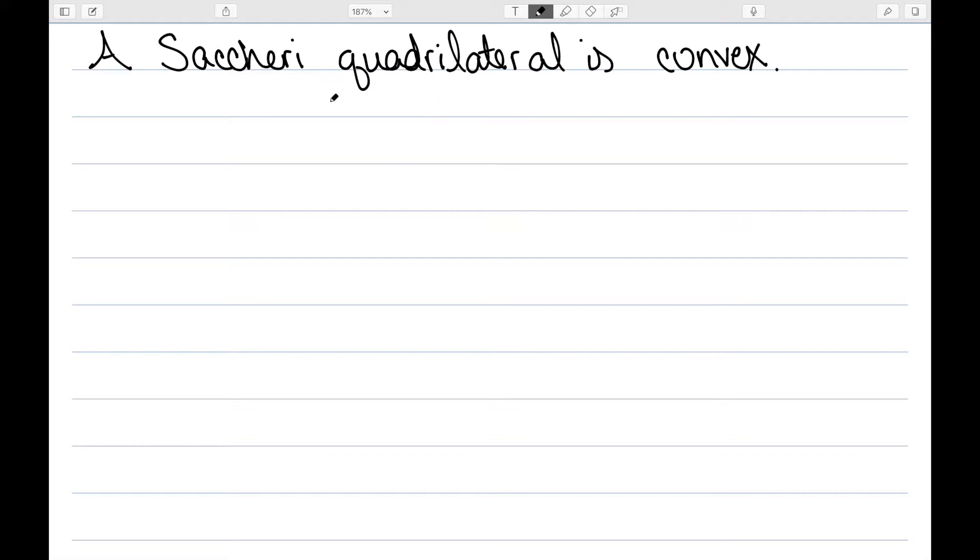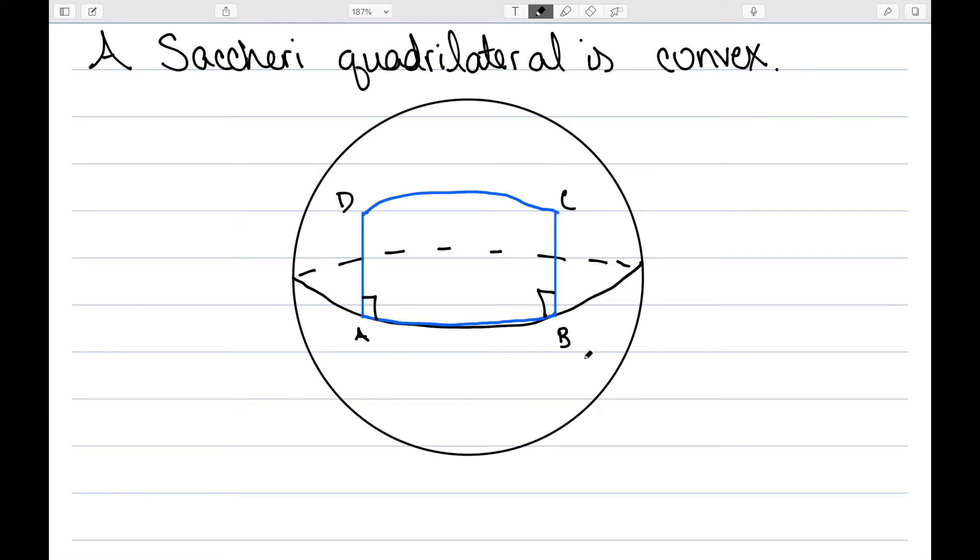When we're in the case of Euclidean space, this is just a rectangle. While I did not draw it great, this is what it looks like on the sphere. We have our segment AB down here, we draw C and D up, and we kind of have this summit here. We can see that if we extend out the summit, it still contains the entire quadrilateral. The same thing if we extend out either of the sides, it will once again contain the entire quadrilateral on one side of it. So this will be convex.